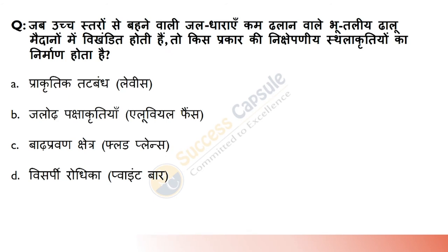Jab uch taaron se behne wali dhaaraein kam dhalan wale bhootaliya dhaalu mein vibhakt hoti hain, toh kis prakar ki nishepaniya thalakritiyaan banti hain? Answer hai Alluvial Fans. Alluvial fans are formed when streams flowing from higher levels break into foot slope plains of low gradient. In humid areas they show normally low cones with gentle slope.